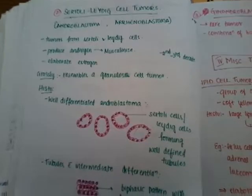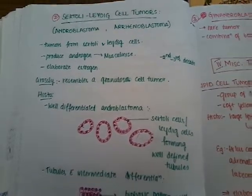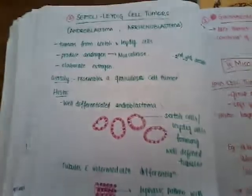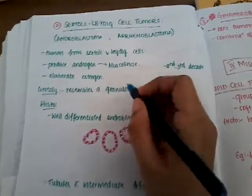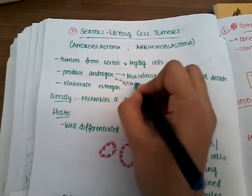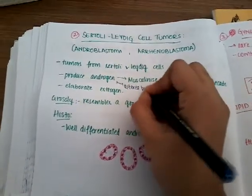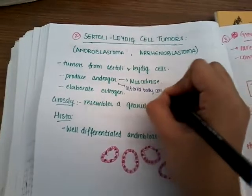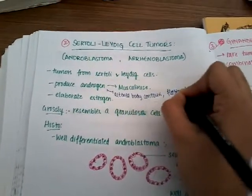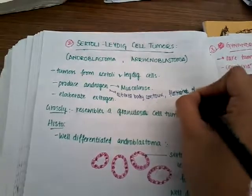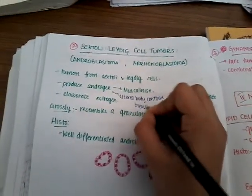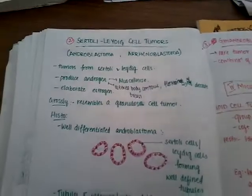These tumors arise from Sertoli cells or Leydig cells. They produce androgen and thus result in masculinization. They also cause altered body contours, flattening of the breast, and amenorrhea.